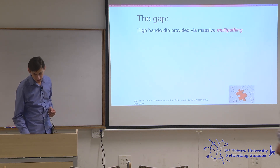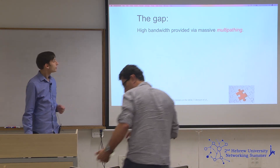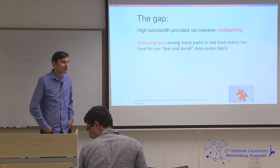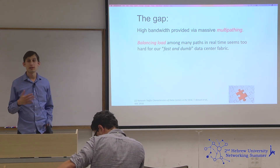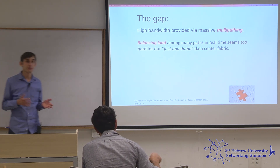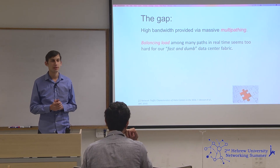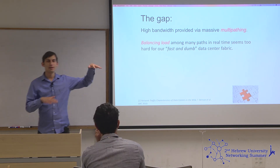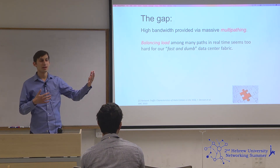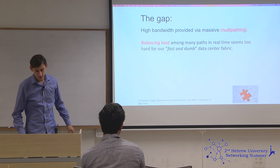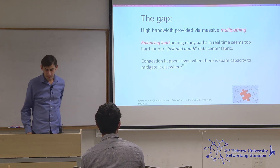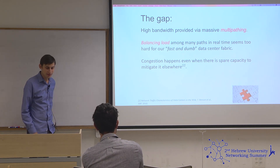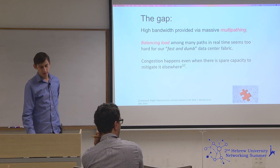The gap here is that we have high bandwidth provided by massive multi-pathing in the data center, but it seems pretty difficult to actually balance load optimally along those paths. If the load is imbalanced, we're effectively wasting capacity — we have to plan for extra capacity so that an unbalanced spike on one path is accommodated rather than equalizing use of the paths we have. It's frustrating that even with that much spare capacity, we still get congestion events.